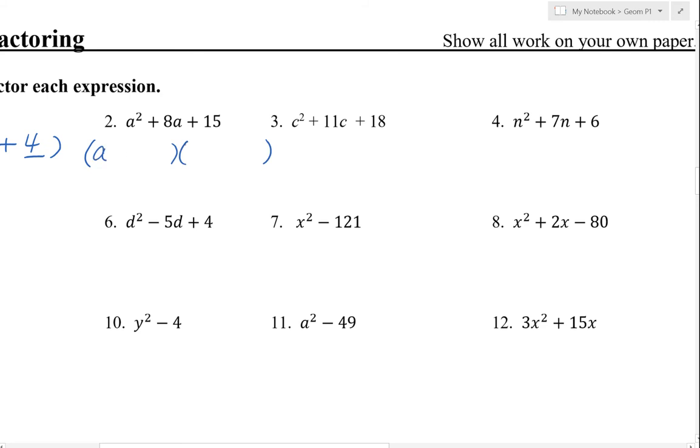For number two, we have a times a to give us that a squared. In the second position, we have to find numbers that multiply to 15. That's going to be 5 times 3 because we want those two numbers to also add to 8, so 5 plus 3 gives us 8.